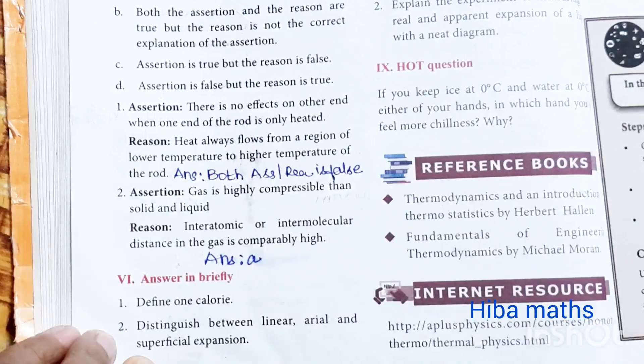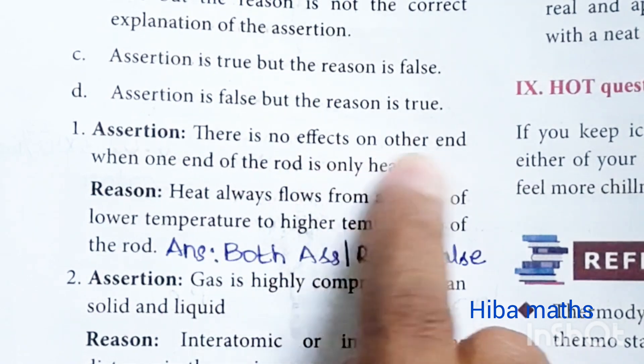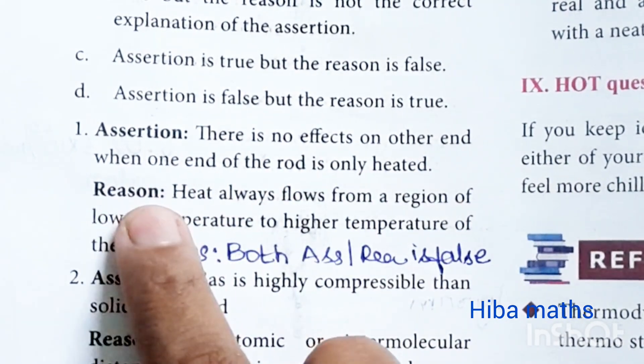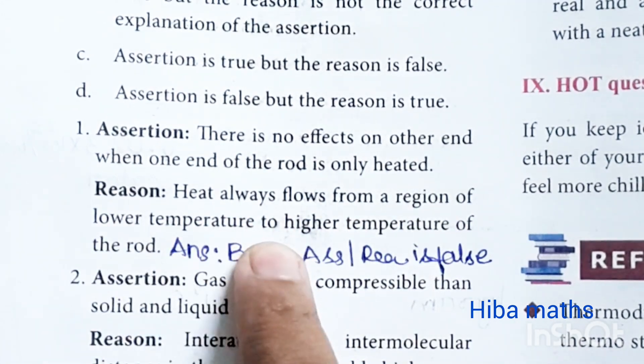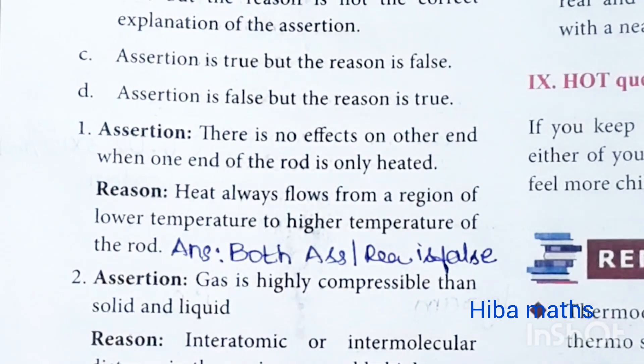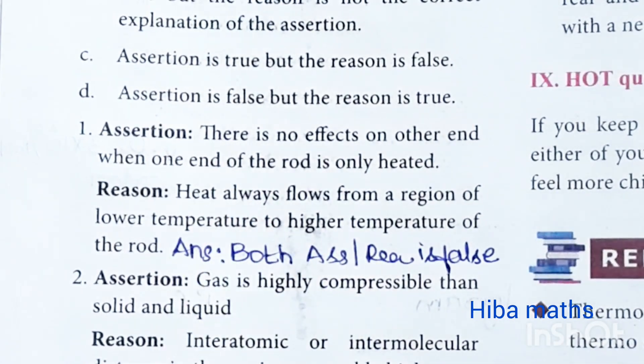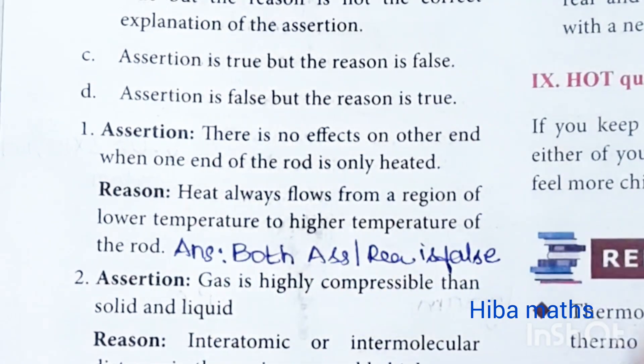Assertion and reasoning: There is no effect on other end when one end of the rod is only heated. Reason: the heat always flows from the region of lower temperature to the higher temperature of the rod. Both assertion and reasoning are false.